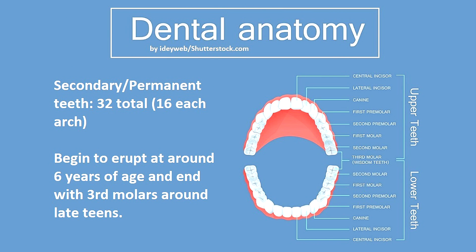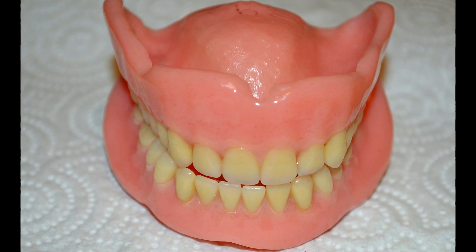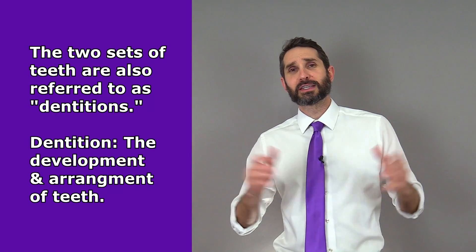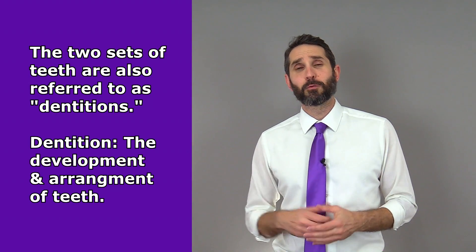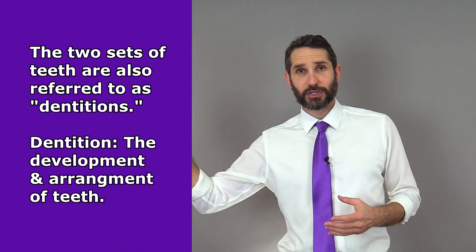The second set of teeth will eventually replace those baby teeth and these are called your secondary or permanent teeth, and adults typically develop up to 32 permanent teeth. And of course, if you were to lose all your permanent teeth, then you might get a third set of teeth known as dentures, but those don't really count. Therefore, you only get two sets of teeth in life, which are also called dentitions.